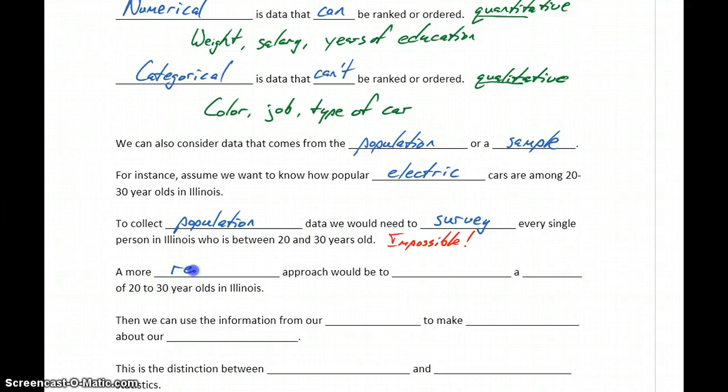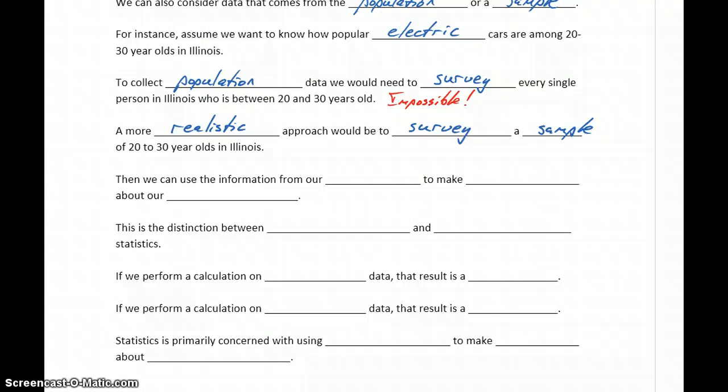A more realistic approach would be to survey a sample of 20 to 30 year olds from Illinois. Rather than trying to find every single 20 to 30 year old in Illinois, we would randomly select 20 to 30 year olds from across the state.